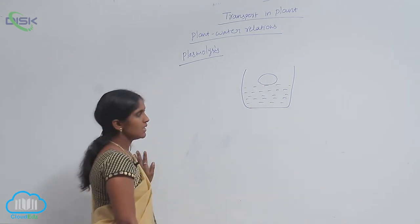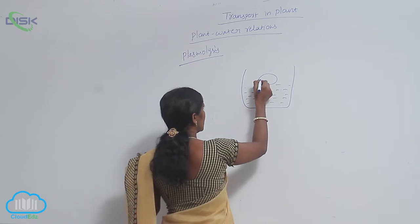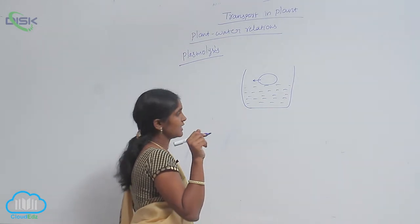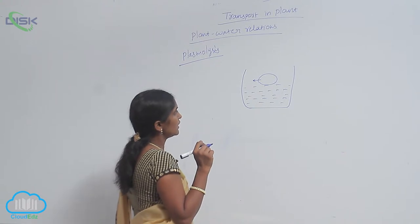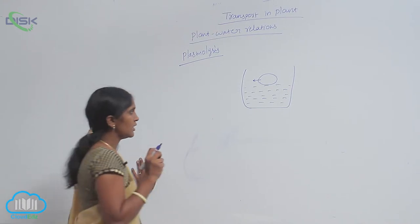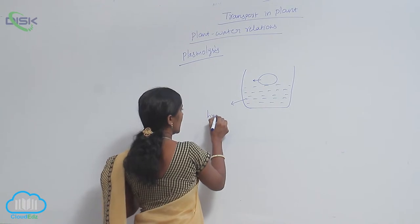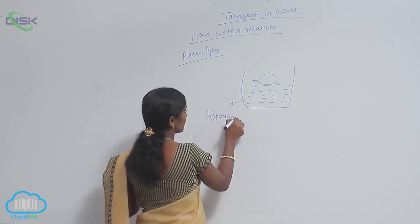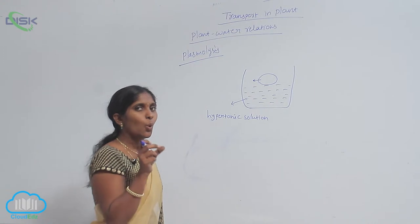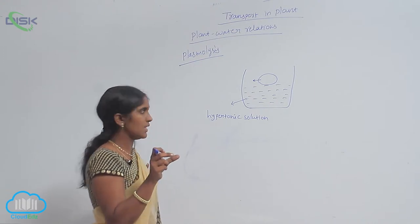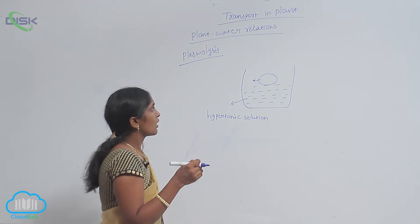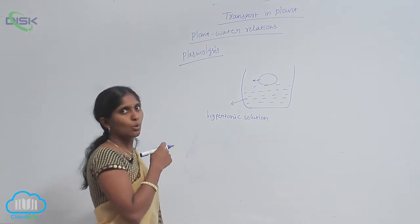If the plant cell loses water, then it becomes flaccid. In what condition does it become flaccid? The protoplast becomes shrinking when the plant cell is placed in a hypertonic solution. In hypertonic solution, the water migrates from high water potential to low water potential.